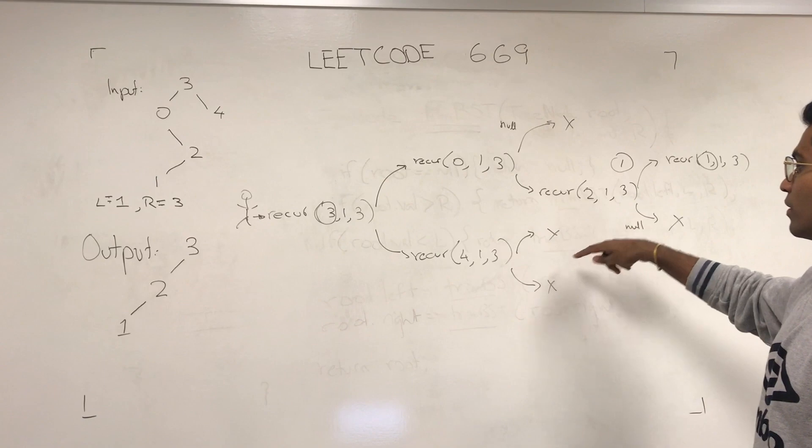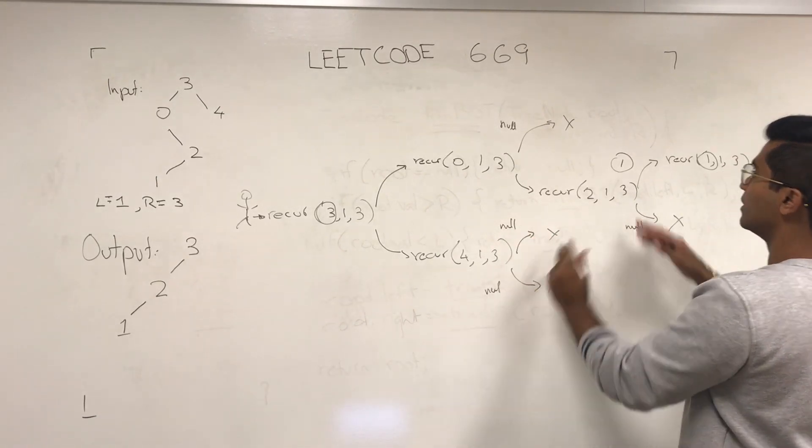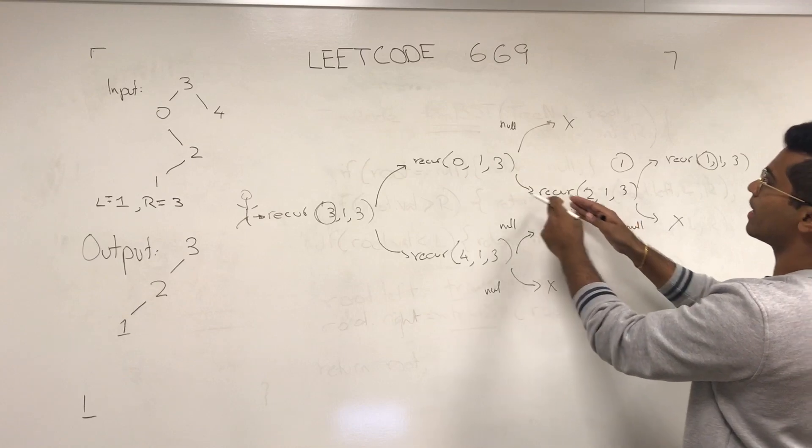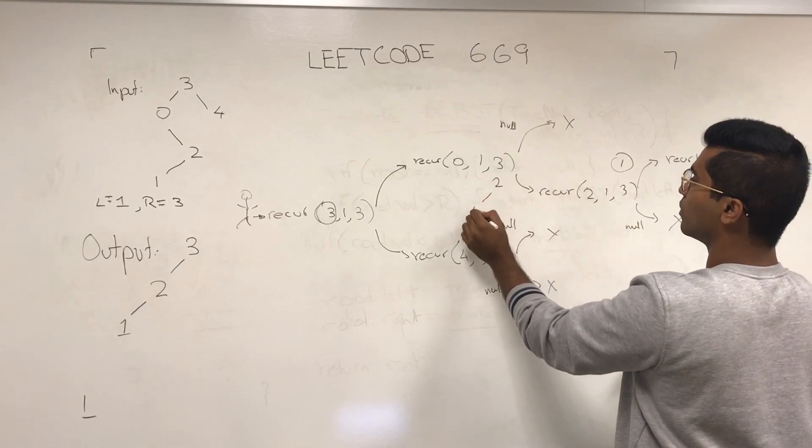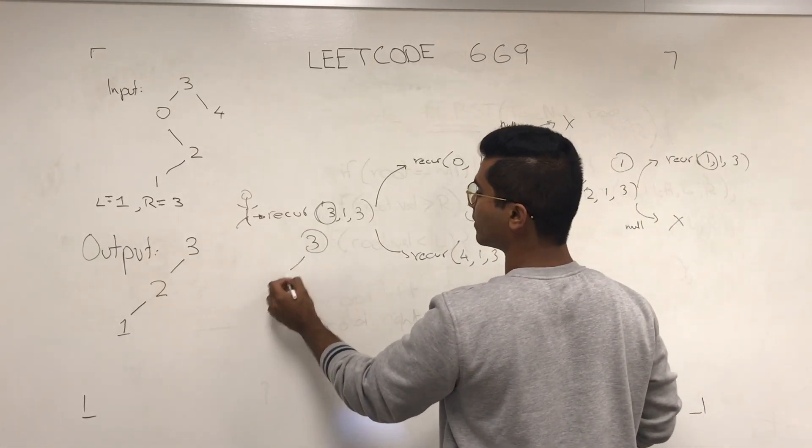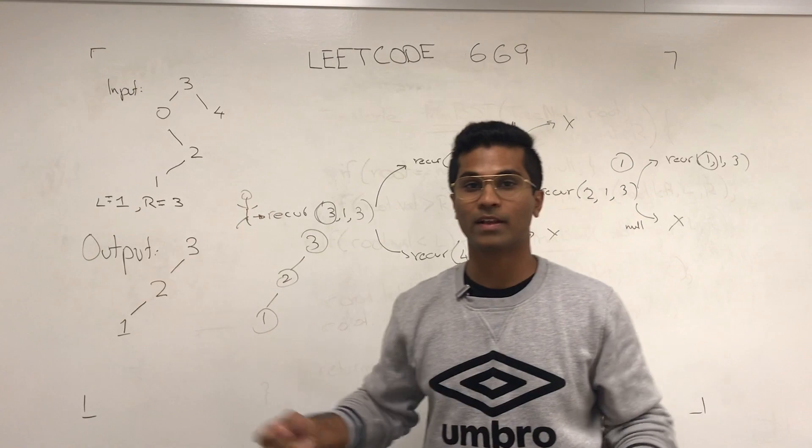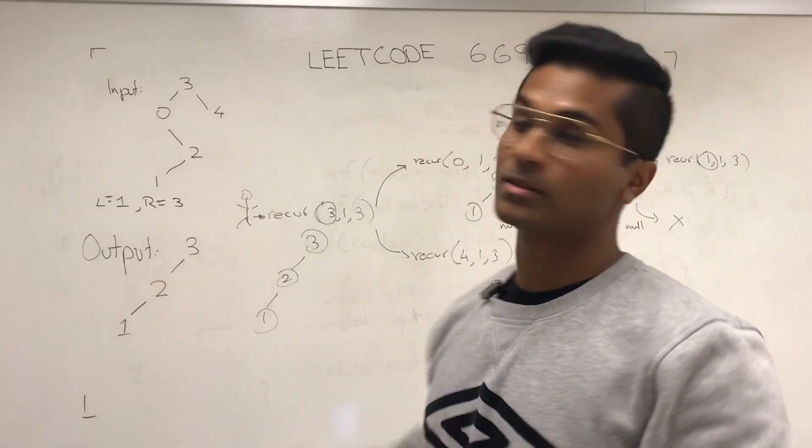And 4 is going to return, is going to get back null, null. Now 2 is going to give back 2 and 1 to 3, and 3 is going to give back this whole output to us, and that's pretty much how you solve LeetCode 669.